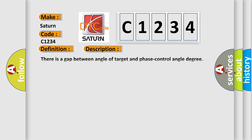And now this is a short description of this DTC code. There is a gap between angle of target and phase control angle degree. Note when the malfunction is detected, the ECM enters fail-safe mode.